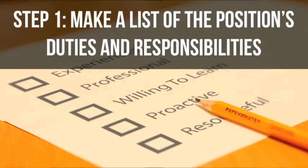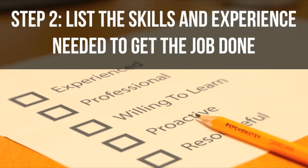Step 2: List the skills and experience needed to get the job done. To make this list most effective for your job description, you want to order it from most important to least important. An easy way to do this is to separate the skills and experience that an employee has to have to even be considered for the position from those that would be nice to have but not absolutely necessary.